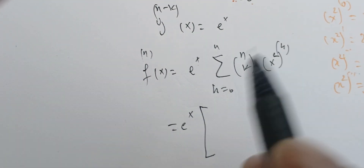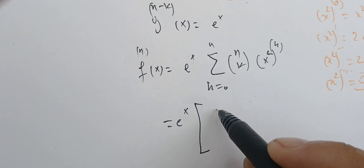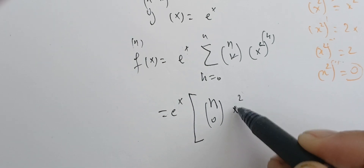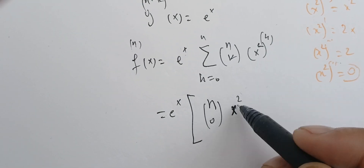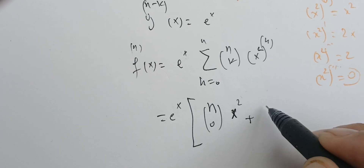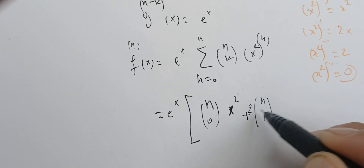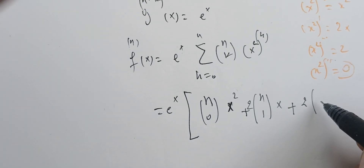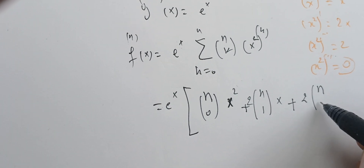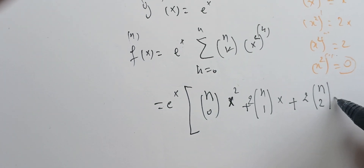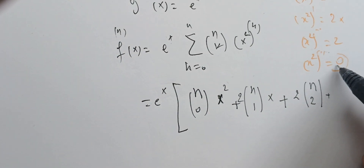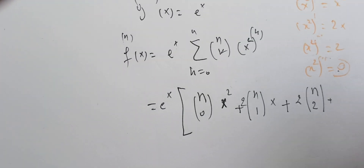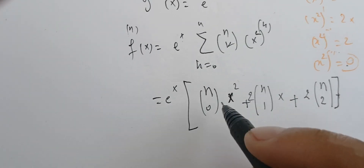Because the derivatives of x² vanish after the second derivative, the sum only runs over k = 0, 1, and 2. When k = 0, we get n-choose-0 times x². When k = 1, we get n-choose-1 times 2x. And for k ≥ 3, everything is zero.